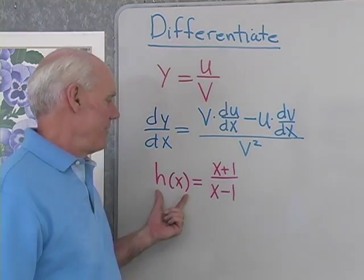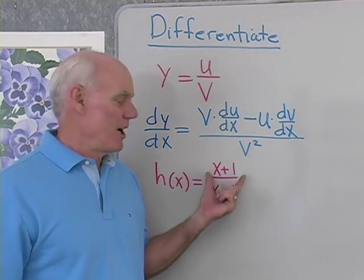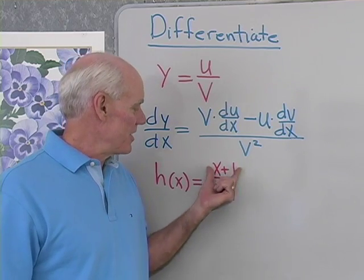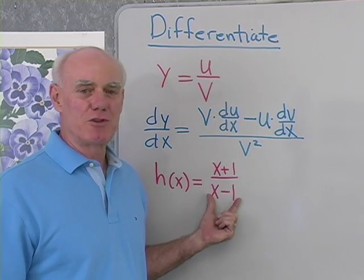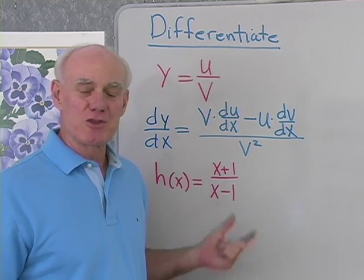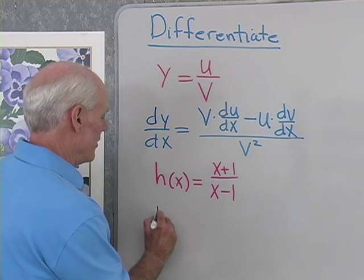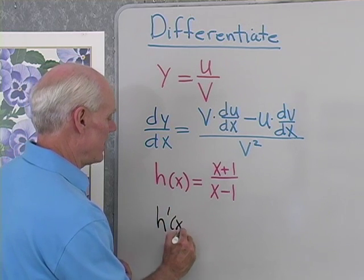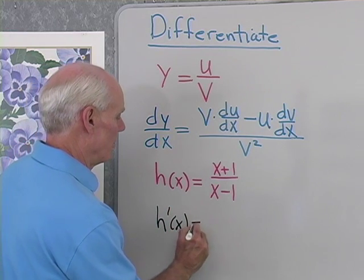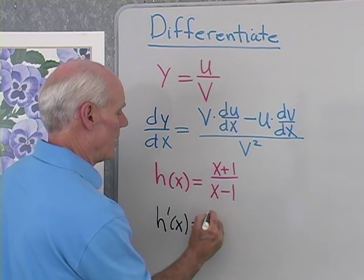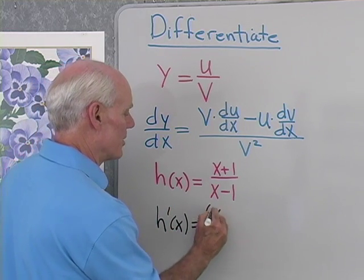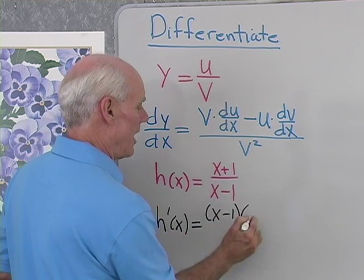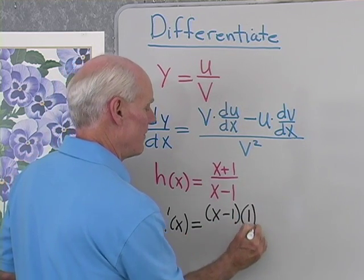Let's try a problem. I have h of x equal to x plus 1 over x minus 1. That's the quotient of two functions of x, so I'll apply my quotient rule. The derivative, h prime of x, will be equal to the bottom, x minus 1, times the derivative of the top, which is just 1.